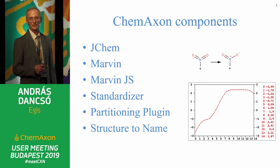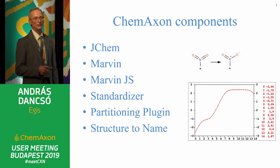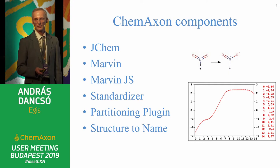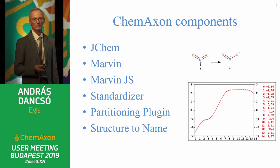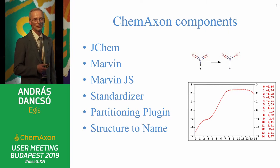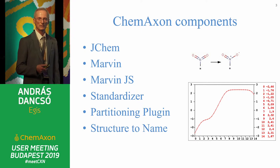Marvin is necessary because we have to draw chemical structures — both Marvin Desktop and Marvin.js. The browser providers declared war against Java, and this resulted in developing Marvin.js, which runs on JavaScript code and is therefore under the complete supervision of the browser.